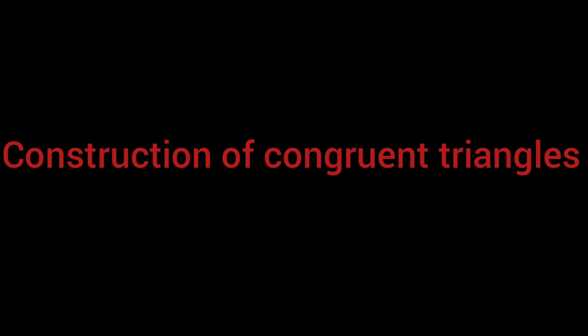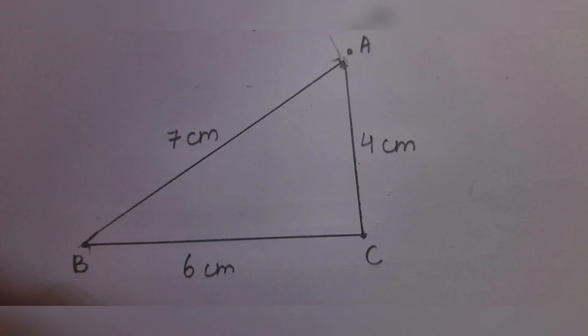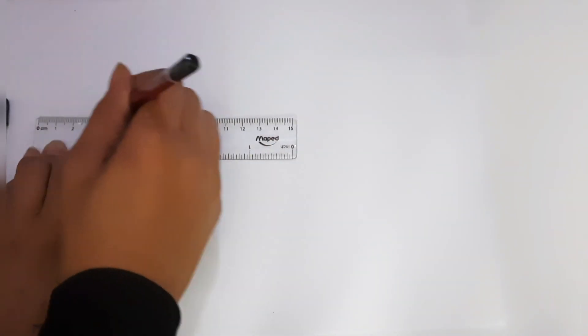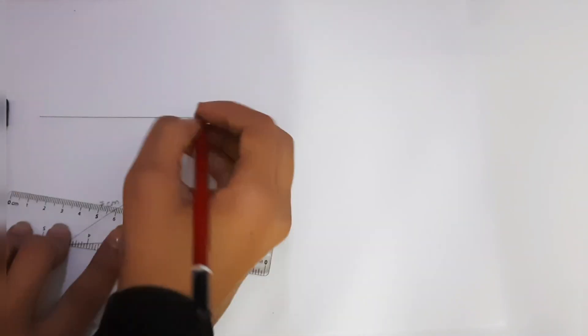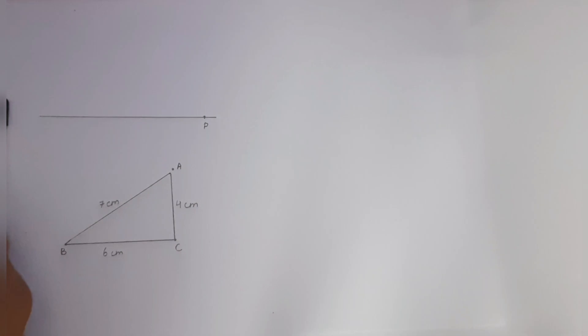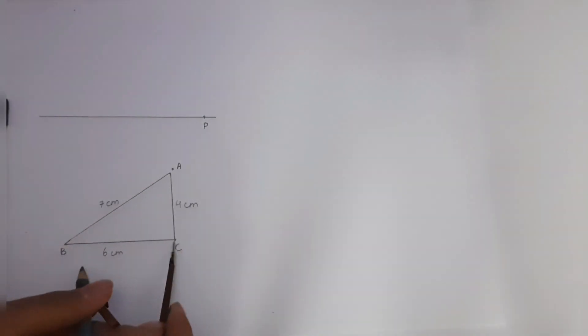I have made a triangle ABC of dimensions 7, 6, and 4 cm. Now, carefully observe how I make a congruent triangle PQR using a compass.